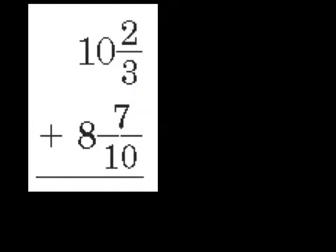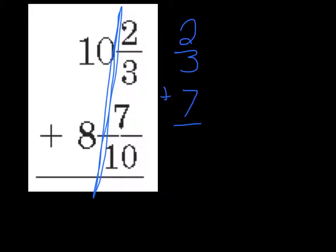Let's take a look at one more. So again, first we're going to kind of think of it as two parts. First let's focus on the fraction. 2 thirds plus 7 tenths. So again, I need to find my common denominator.